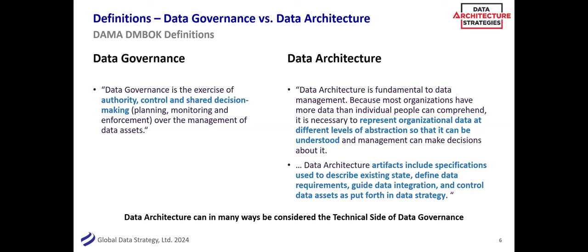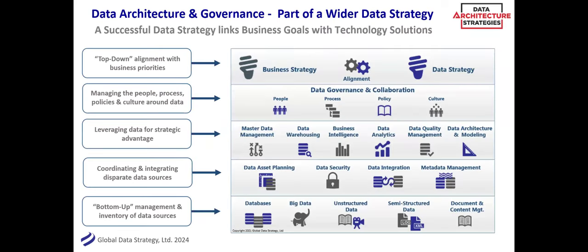We use a diagram in our practice that is loosely based on the DMBOK but shows what a data strategy really is. At the top is the business strategy — why are we even doing this? There's a lot of data you can manage. How do we prioritize? How do we focus on the right things? You do that through the second row: your data governance and collaboration, getting the right people and the right culture to ask those questions.